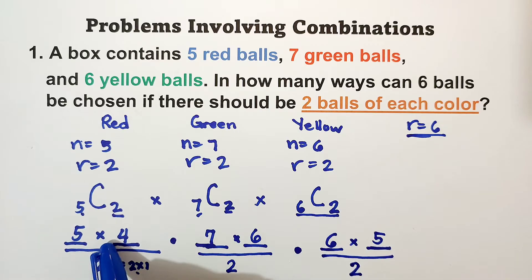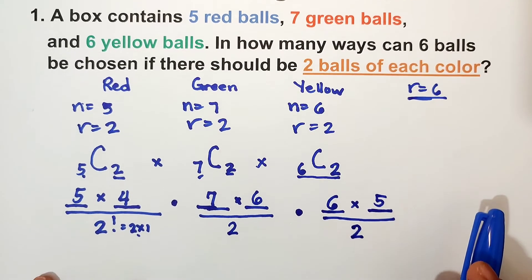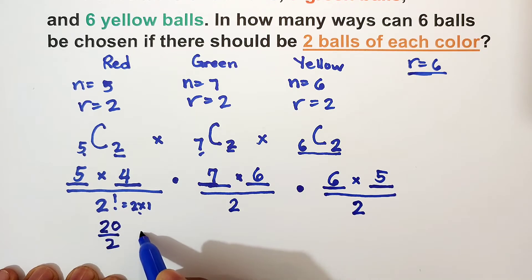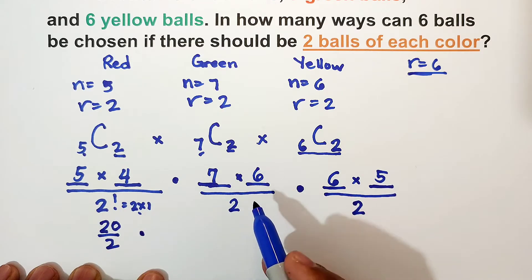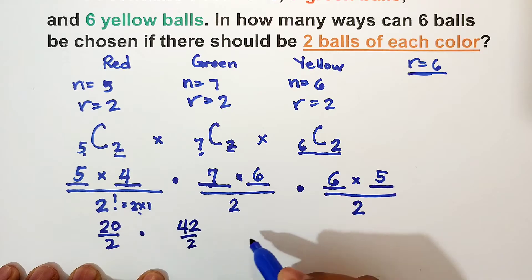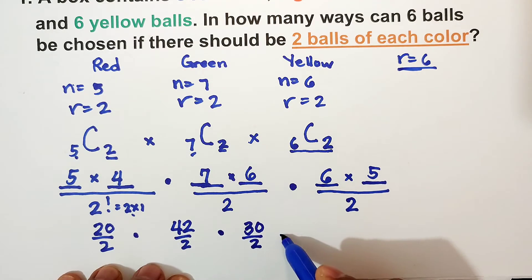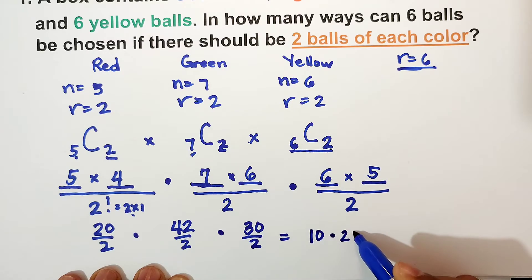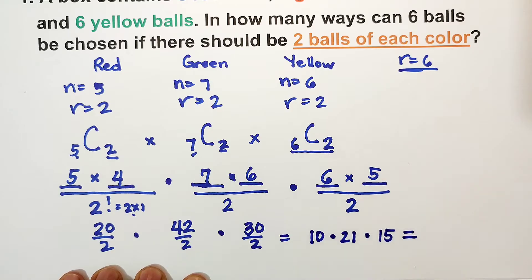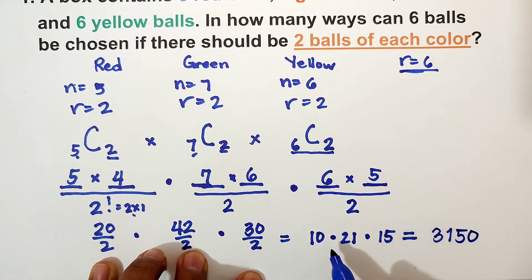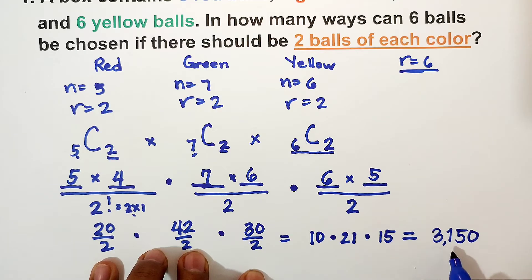Five times four is twenty, divided by two. Forty-two divided by two. Six times five is thirty, divided by two. That is equal to ten times twenty-one times fifteen. And that is equal to three thousand one hundred fifty. Ten times twenty-one is two hundred ten, times fifteen is three thousand one hundred fifty. So there are three thousand one hundred fifty ways to choose two balls of each color.